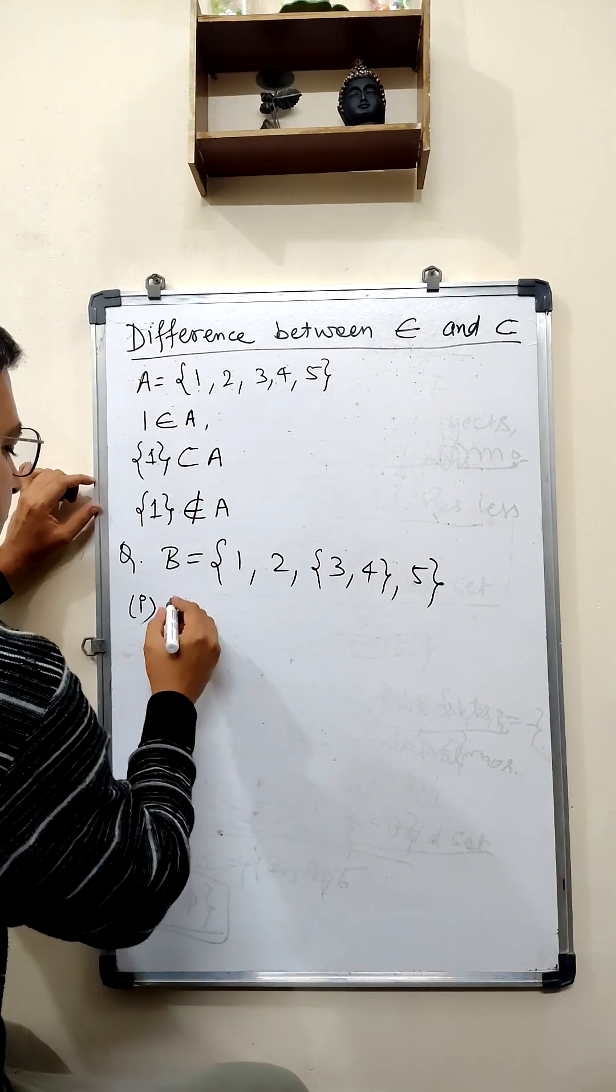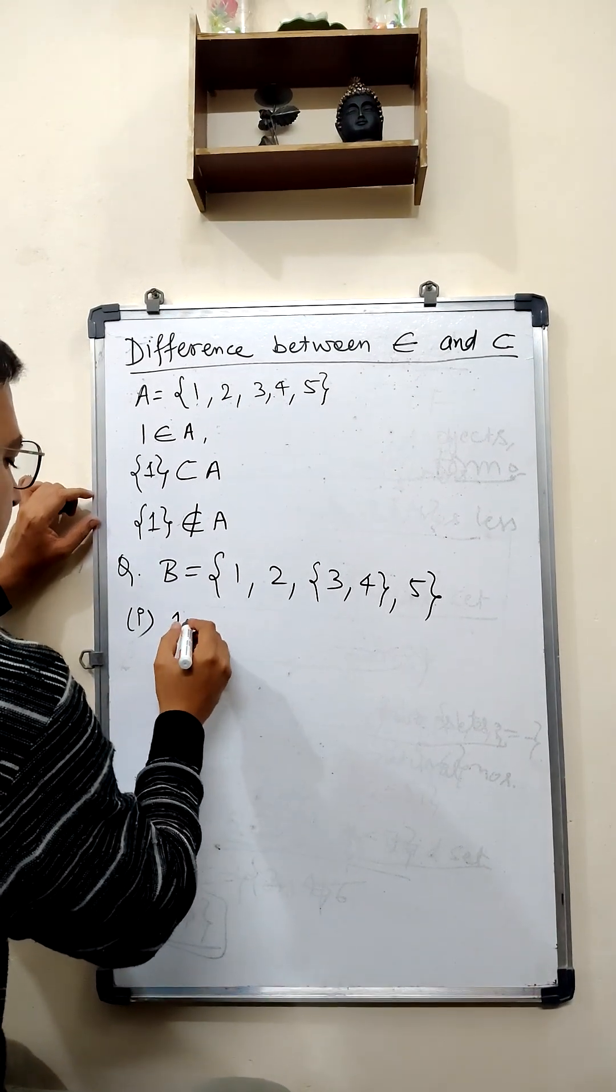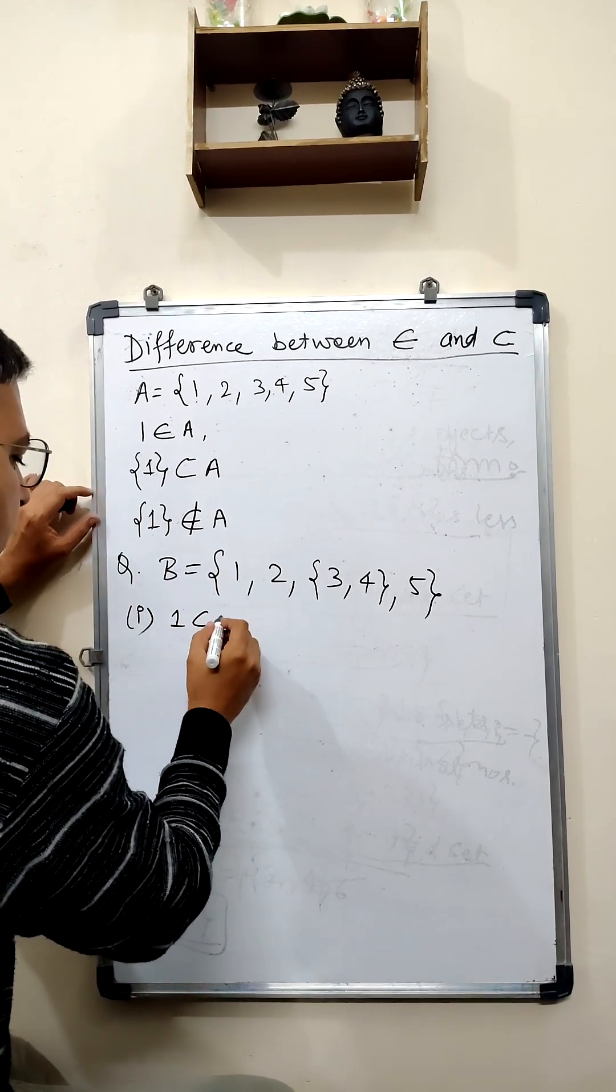First, true or false: {1} is a subset of B.